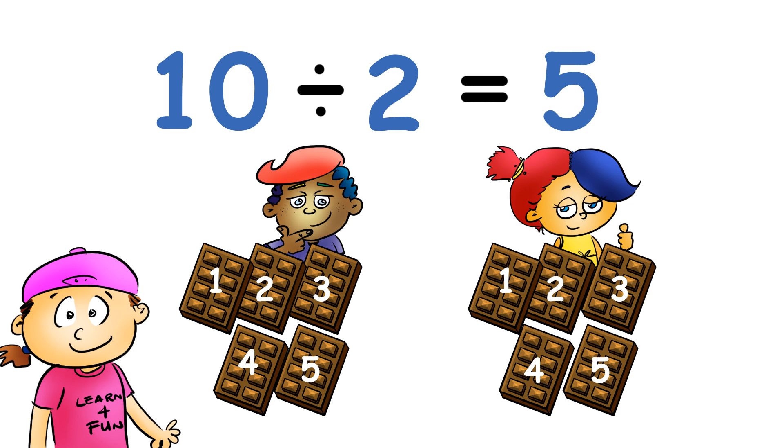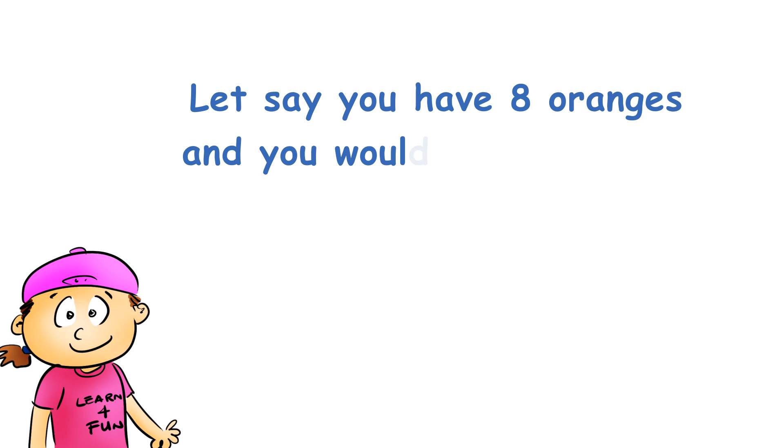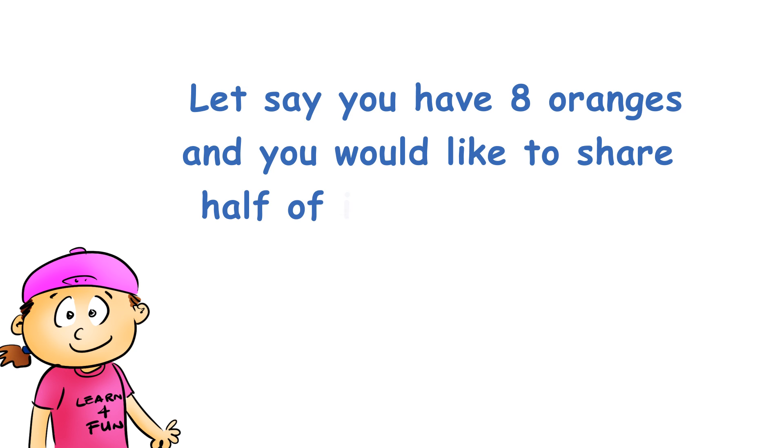So you and your friend would each have five chocolate bars. So ten divided by two is five. So one more — let's say you have eight oranges and you'd like to share half of them with your friend.